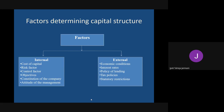The sixth internal factor is the attitude of management - whether the manager wants control, whether they are ready to take risk. If management has an attitude of taking risk, they will go towards debt. If management wants full control in their hands, they will again go for debt and avoid equity. If they are risk-averse and not bothered about control, they will move towards equity.